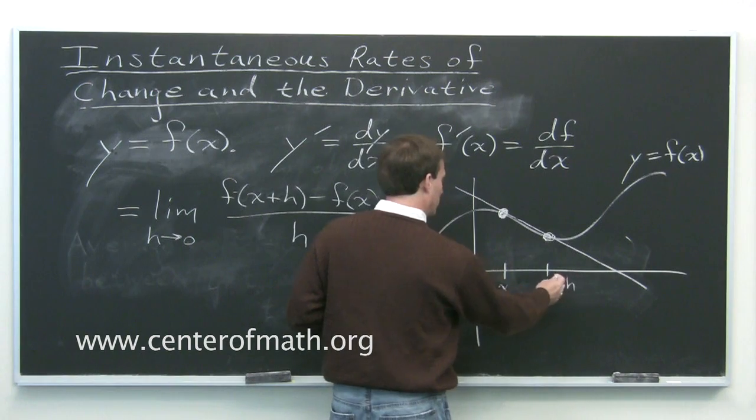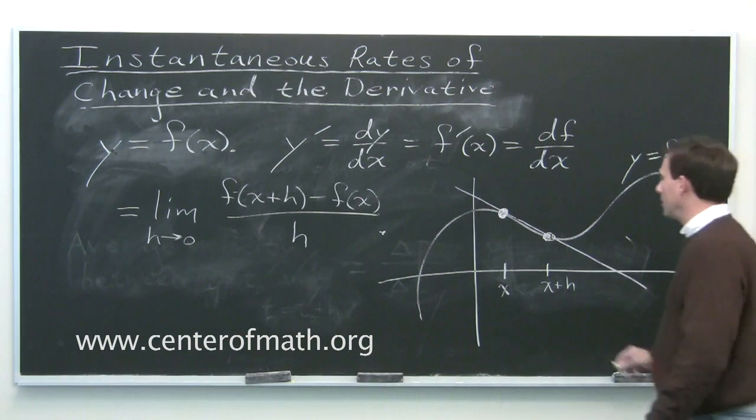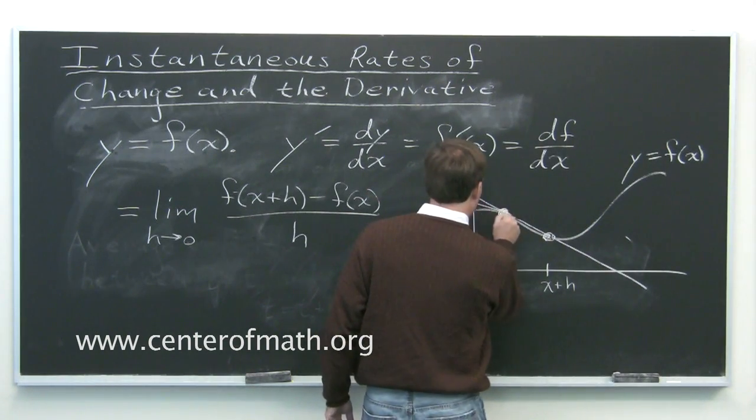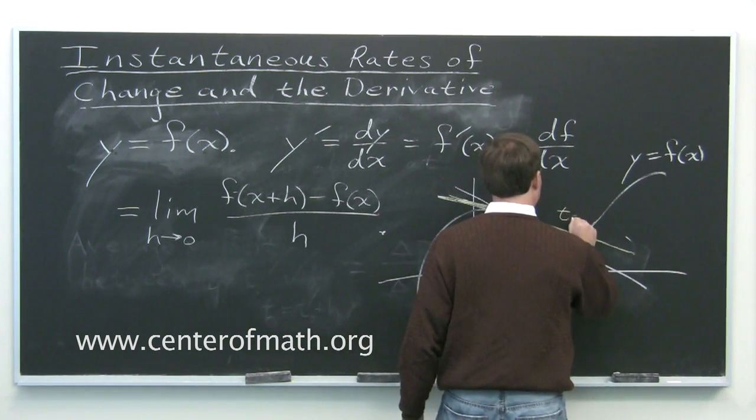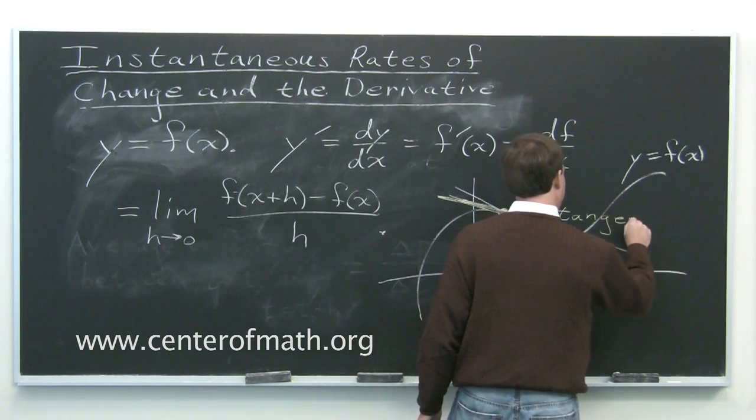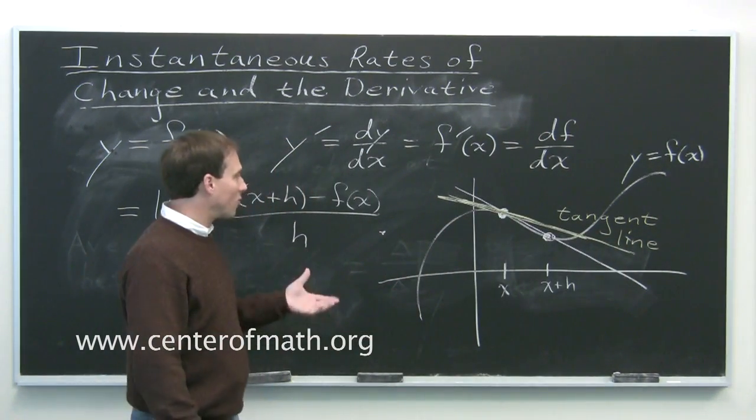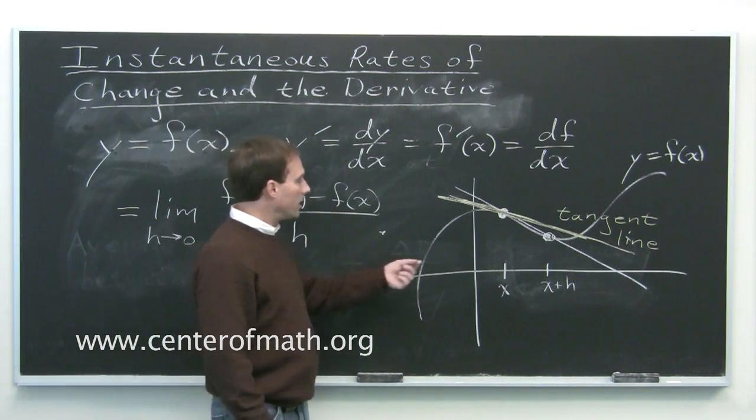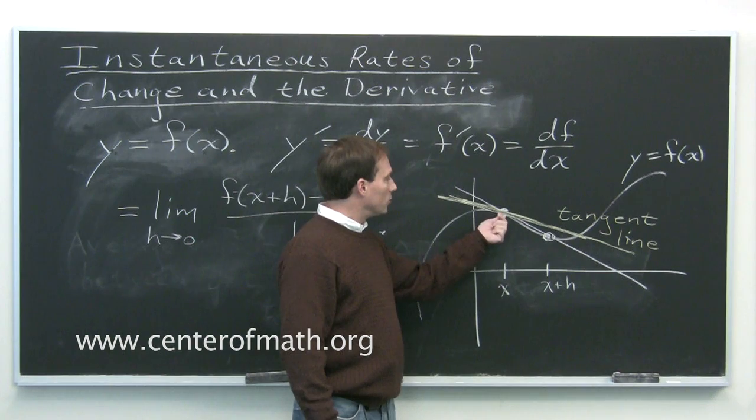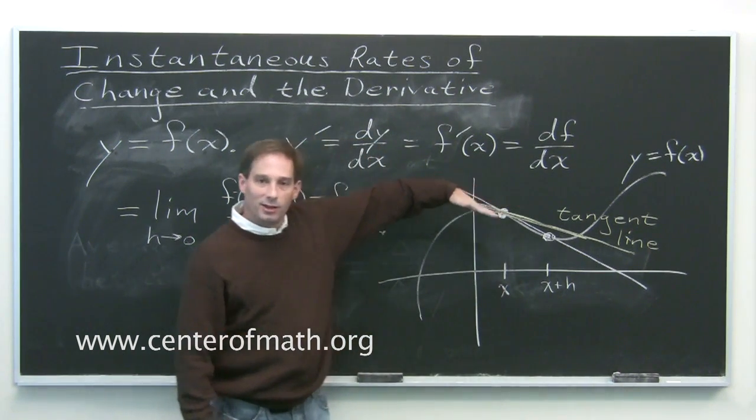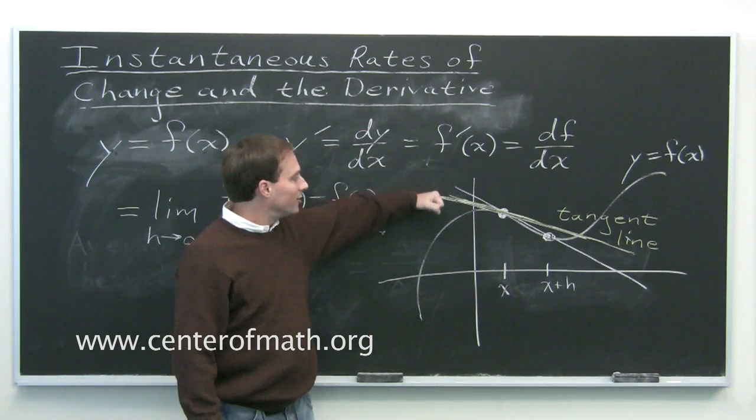But as h approaches zero, this point gets closer and closer to this point. And in the limit, what you end up with is a line that just glances off of the graph at that point. This is called the tangent line to the graph at that point. And it's how you picture derivatives graphically. If you have the graph of the function and you want to know what the derivative of the function is at some x value, you go to the corresponding point on the graph and look at the slope of the tangent line. You draw a line that just glances off of the graph there and you look at its slope.